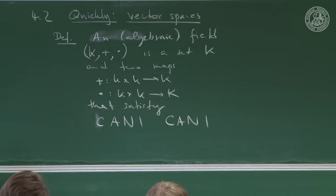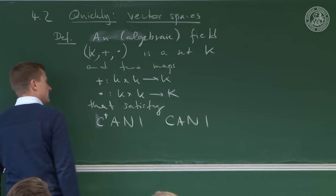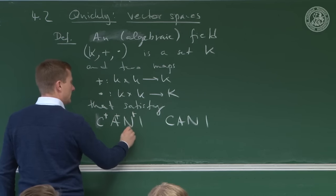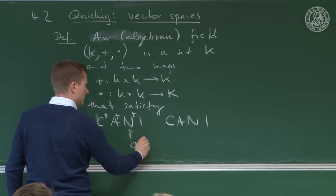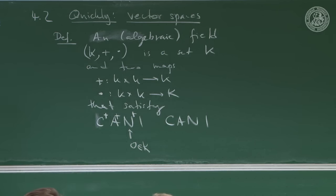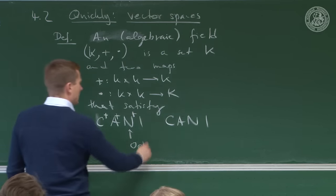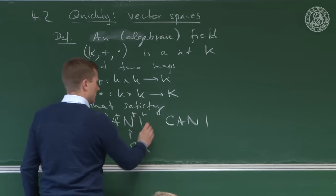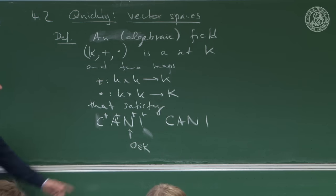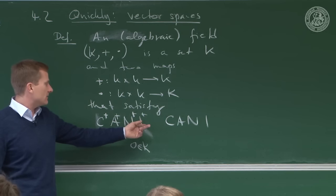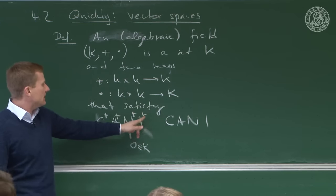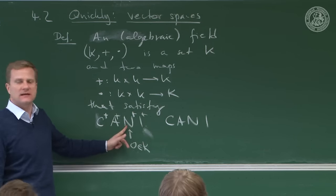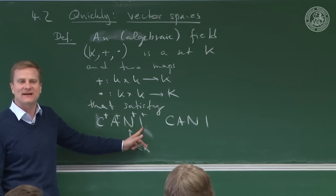You saw this before, so I'll make it quick. The addition is commutative, it's associative, there exists a neutral element we call zero in the set, and for every element there exists an inverse. The inverse is defined such that you take an arbitrary element, add its inverse, and get the neutral element.